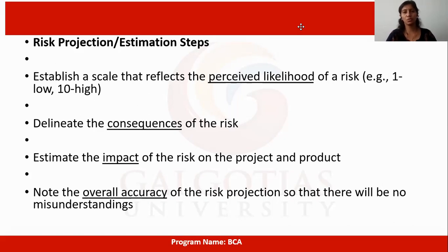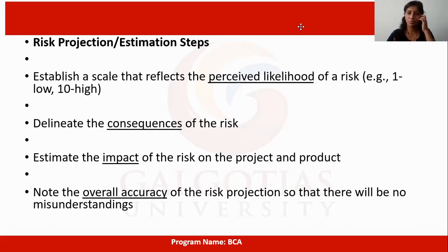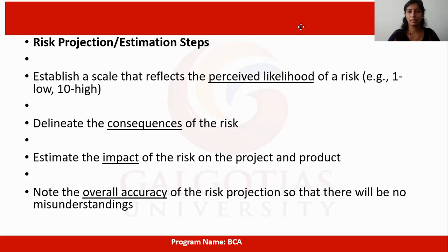We will have to make a table and predetermine what each risk is. On a scale of 1 to 10, we measure the risk and establish a scale that reflects the perceived likelihood of a risk. How far the effect of a risk would reach can be predetermined with the scale and its level.